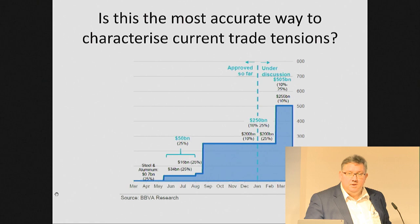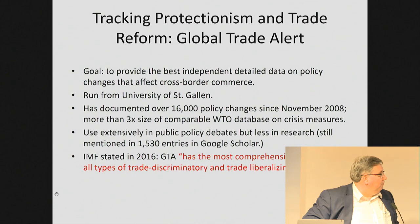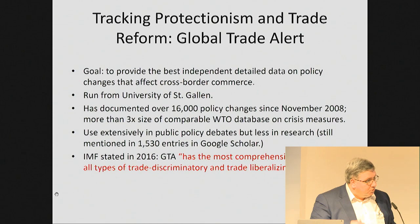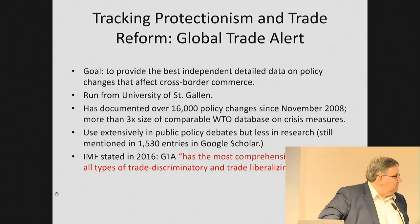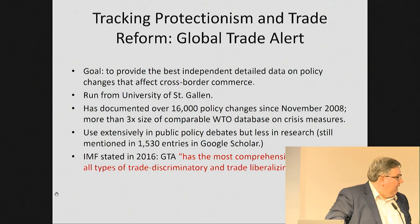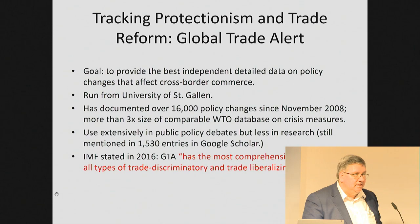I'm going to draw from a database my team has assembled at the University of St. Gallen over the last 10 years. We look for any public policy intervention that changes the relative treatment of domestic versus foreign commercial interests. A tariff reduction benefits foreign firms over domestic firms — we would count that. A tariff increase is the opposite. We also look at interventions which benefit domestic firms at the expense of foreign firms in the forms of subsidies and state largesse, local content requirements, and government procurement provisions which bias contracts towards local firms like Buy America. We do not include health and safety standards or regional trading agreements.